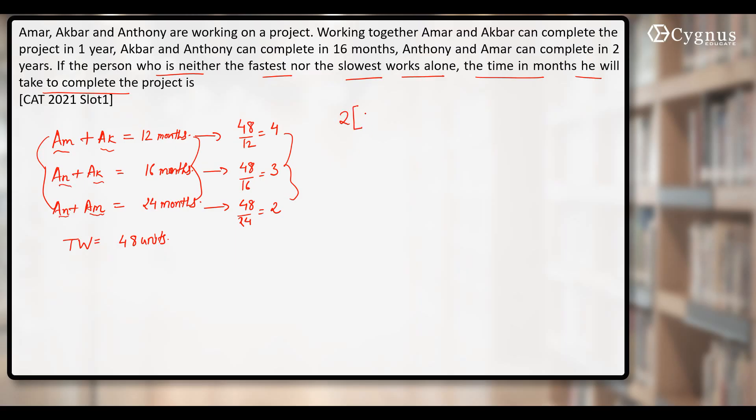So I can write twice the work done by Amar, plus twice the work done by Akbar, plus Anthony. This sum becomes 4 plus 3 plus 2, that is 9.